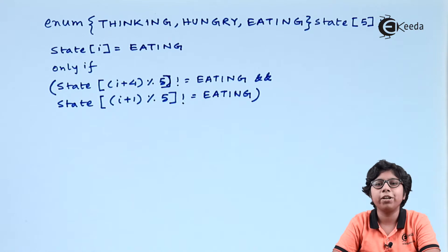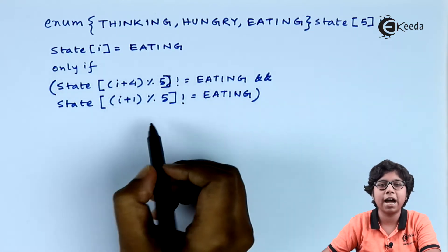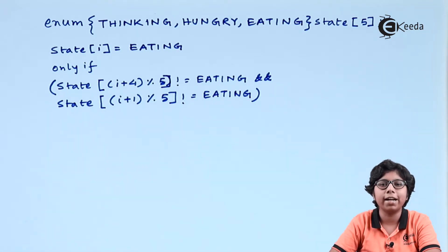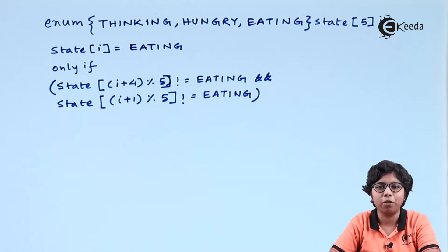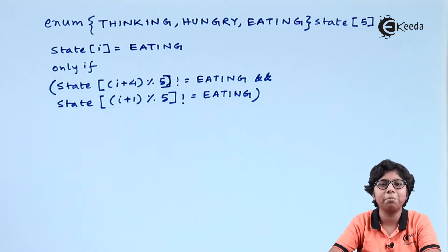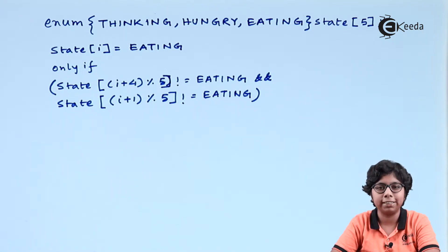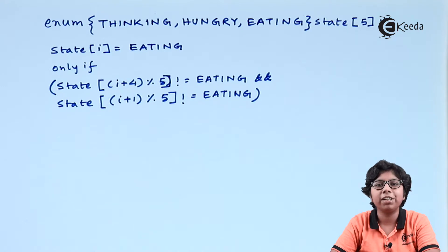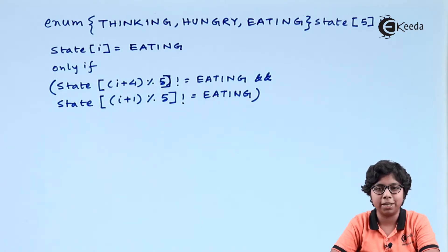We are putting state[i] equal to eating if the neighbors — considered as (i+4) mod 5 and (i+1) mod 5, that is the left and right neighbor of the particular philosopher — are not eating. By this data structure we can delay the philosopher's access to the chopsticks if she is hungry but the chopsticks are not available.